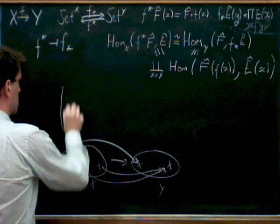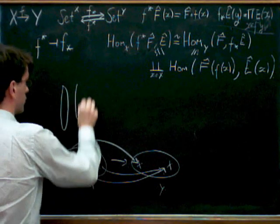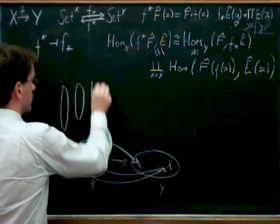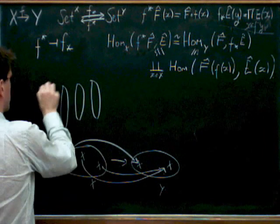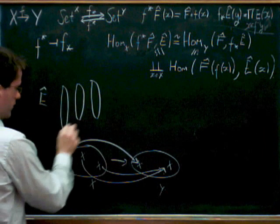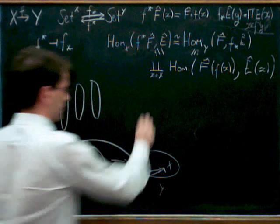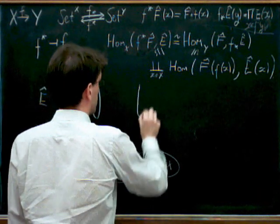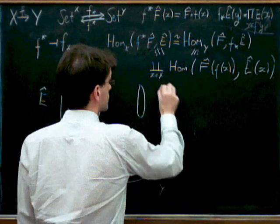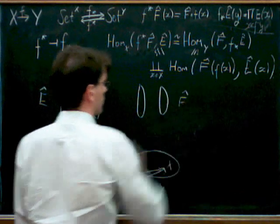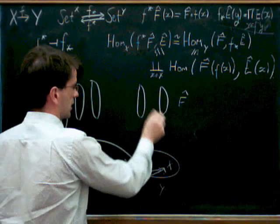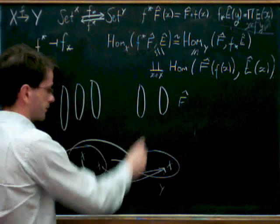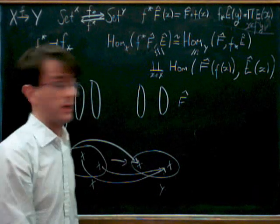We'll just map those two points to the same point there. And sitting over X we've got E, so we've got these three fibers. So E, E hat, we have these three fibers sitting over the three points in X. And we've got F, which is just the fibers sitting over, so these are just sets, the fiber sitting over each of the points in Y.